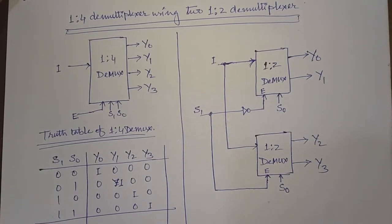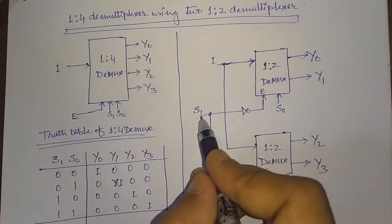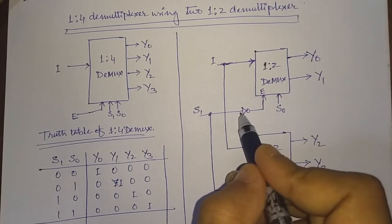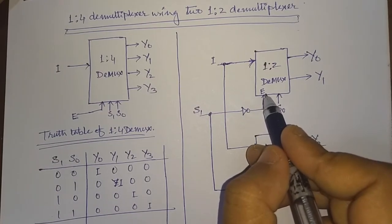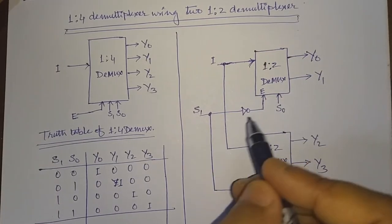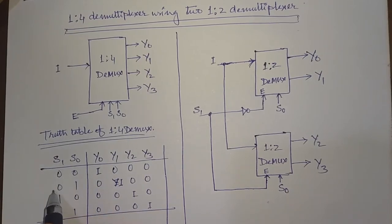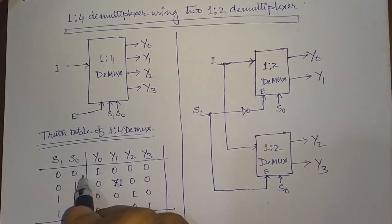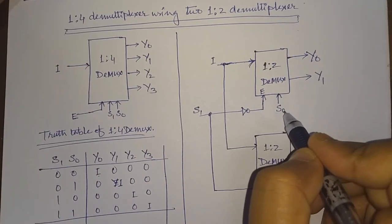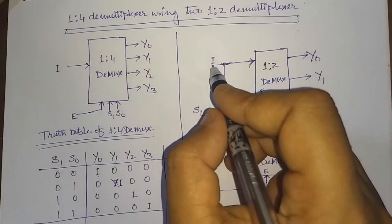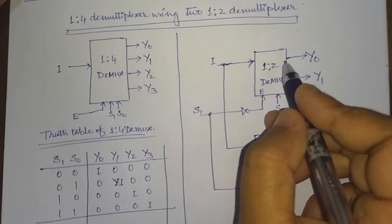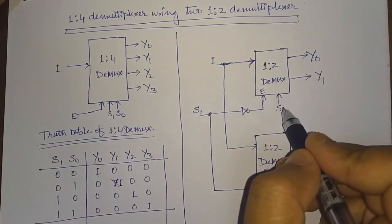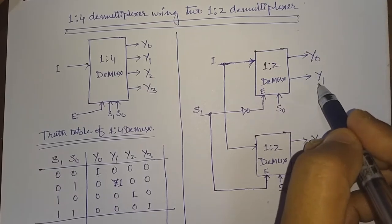Let us verify using the truth table. When s1 is 0, the upper demultiplexer's enable is low — so it is off — but the inverter outputs 1 to the lower demultiplexer's enable, activating it. With the lower demultiplexer active, when s0 is 0 the input data is directed to y0, and when s0 is 1 the input data is directed to y1.